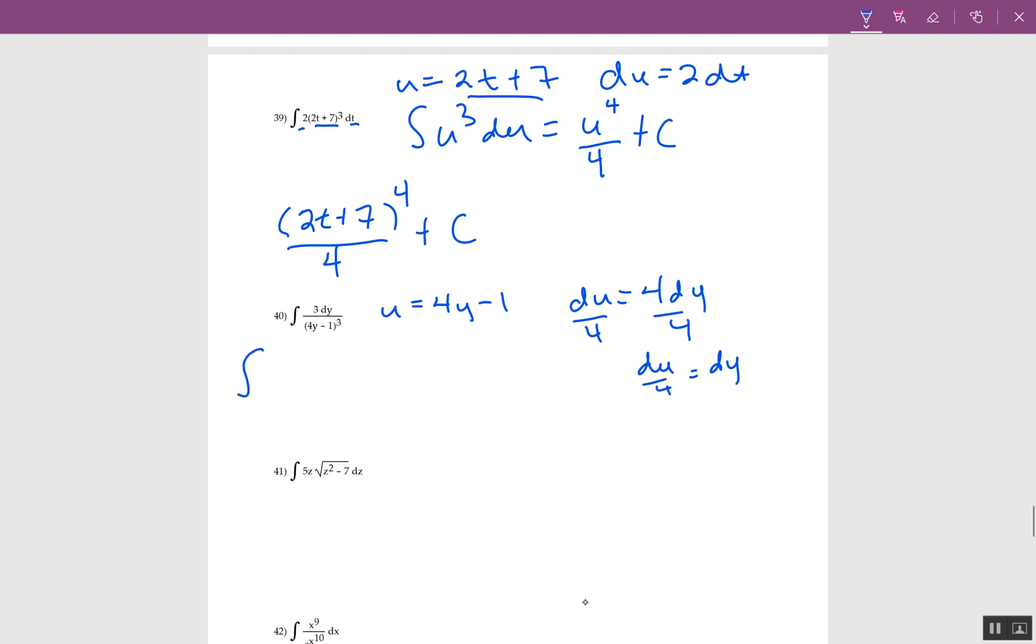So I integrate. I have 3, dy is du over 4, and then I have u cubed. We talked about how to simplify: put the numbers together. So the numbers are 3 and 4, that's 3/4. u is to the power of negative 3, then du.